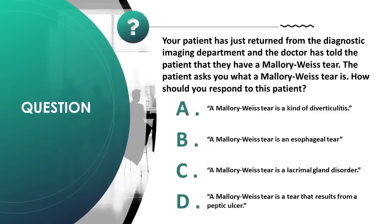Your patient has just returned from diagnostic imaging and the doctor has told them they have a Mallory-Weiss tear. The patient asks what it is. How should you respond? A) a kind of diverticulitis, B) an esophageal tear, C) a lacrimal gland disorder, D) a tear that results from a peptic ulcer. Correct answer is B. A Mallory-Weiss tear is a linear tear of the esophageal mucosa.